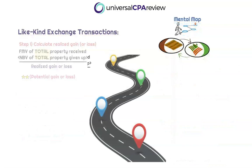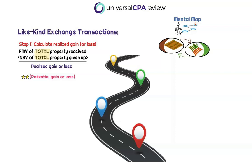Step one is going to be calculating the realized gain or loss from the transaction. This is going to be calculated as the fair market value of the total property received, less the net book value of the total property given up. The keyword we're going to highlight is 'total' — and this is going to be different from the keyword we highlight in step four, which is 'like-kind,' but we'll get there in a second.